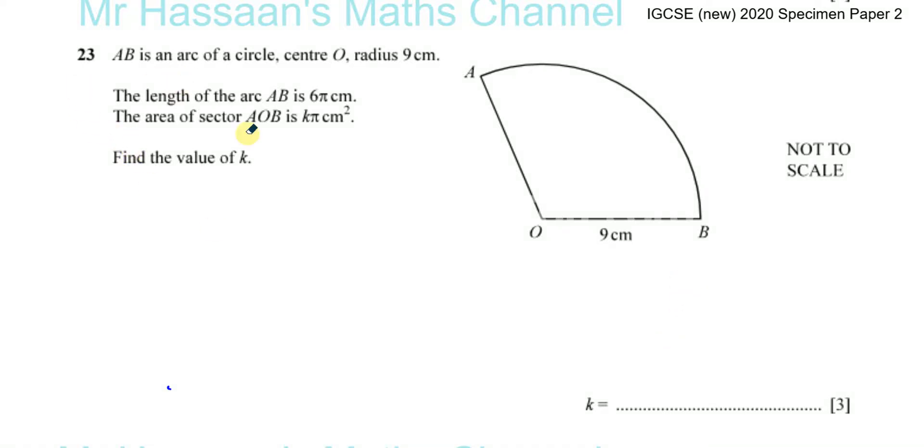Moving on to question number 23. We have AB, which is an arc of a circle with center O and radius 9 cm. The length of arc AB is 6π centimeters. The area of sector AOB is kπ centimeters squared. Find the value of k.